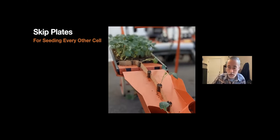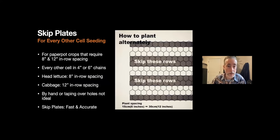This is going to come in handy when you're planting crops that require wider in-row spacings, so either 8 inch or 12 inch in-row spacings are the most common. You achieve this by seeding every other cell in a 4 inch or 6 inch chain. This is most common with head lettuce, which is 8 inch in-row spacing typically, or cabbage, which is often 12 inch in-row spacing depending on the cultivar you're working with.